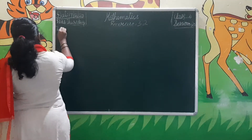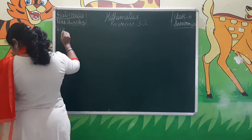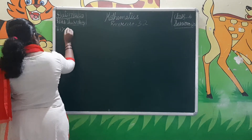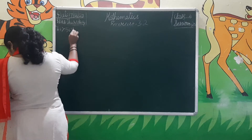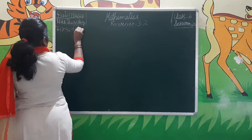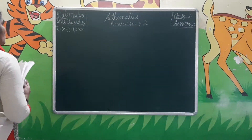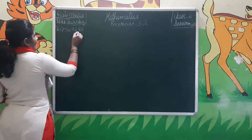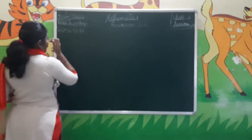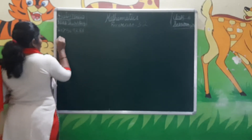In the 6th problem, first step: the number given is 569,288. The digits in the ones, tens, and hundreds place are 2, 8, 8. We need to check if 288 is divisible by 8.